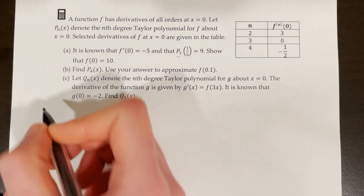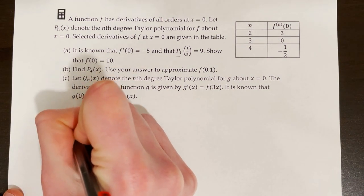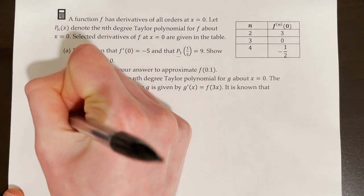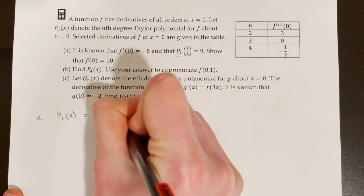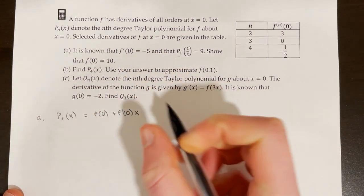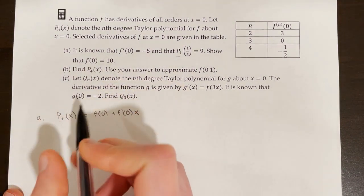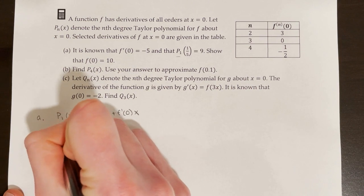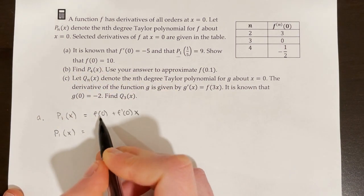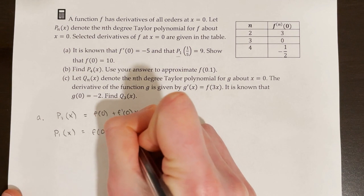Since we have p sub 1, we're working with a first degree Taylor polynomial for f centered at x equals 0. The first degree Taylor polynomial centered at x equals 0 is p sub 1 of x equals f of 0 plus f prime of 0 times x. Plugging in f prime of 0 as negative 5: p sub 1 of x equals f of 0 minus 5x. Then substituting x equals 1 fifth: p sub 1 of 1 fifth equals f of 0 minus 5 times 1 fifth. Since p sub 1 of 1 fifth equals 9, we get f of 0 minus 1 equals 9, so f of 0 equals 10.